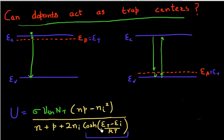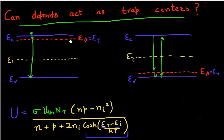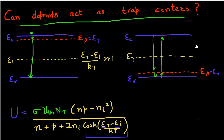This hyperbolic cosine function depends upon how far my trap level is from my intrinsic energy level E_I. Let's draw my intrinsic energy level, which is close to mid band gap. If the trap state is given by the energy level of my donor, then what I get is E_T minus E_I, and this would be far away from the intrinsic energy level for a good donor atom, so (E_T − E_I)/kT should be much larger than 1. Similarly, if I have a trap level very close to the conduction band, then E_I minus E_T divided by kT should again be much larger than 1.